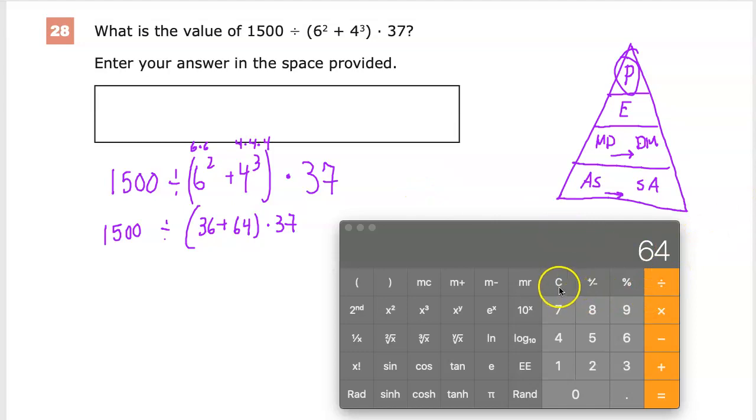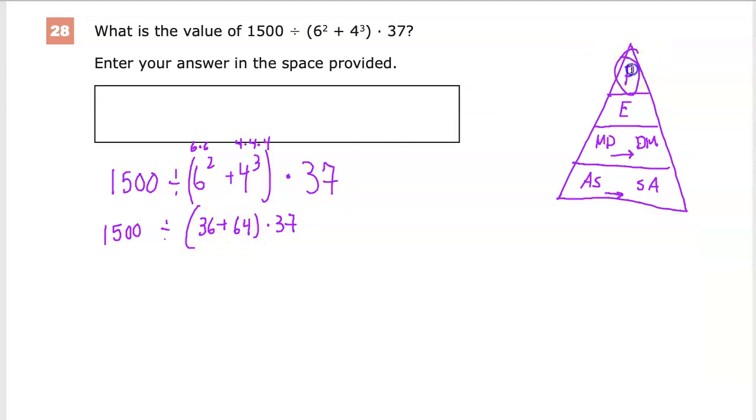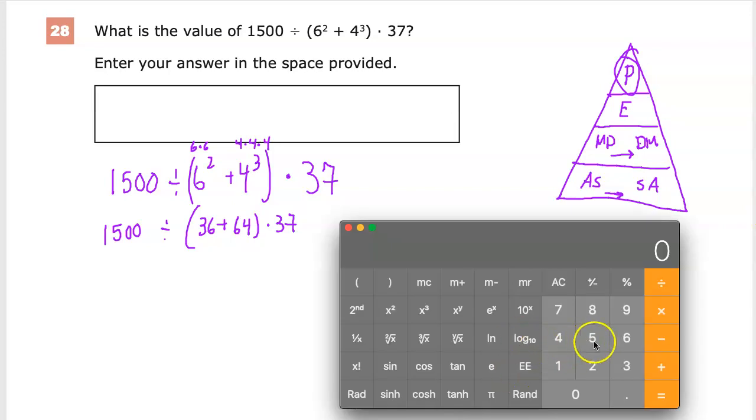The calculator is going to do what the calculator does, and it tries to follow order of operations, but sometimes it can't. So you have to be wary or leery of that sort of thing. 36 plus 64, why am I doing this? Yes, it's an add because it's in parentheses. That's the next step. I don't know why I felt like I needed to do that to get 100, but here we are.